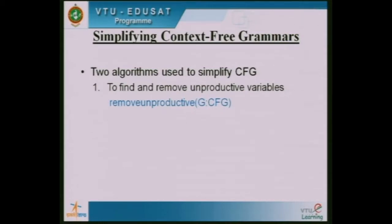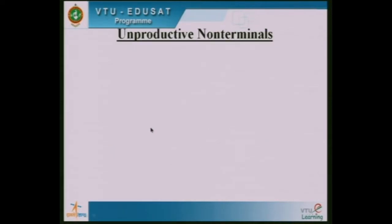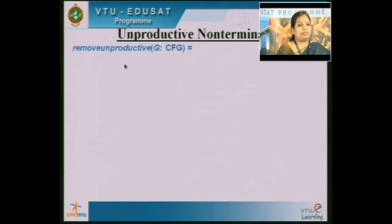The first algorithm is to find and remove unproductive variables using the 'remove unproductive' algorithm. If there are any unproductive variables they are removed from the context free grammar. The second algorithm is to find and remove unreachable variables using the 'remove unreachable variables' algorithm.